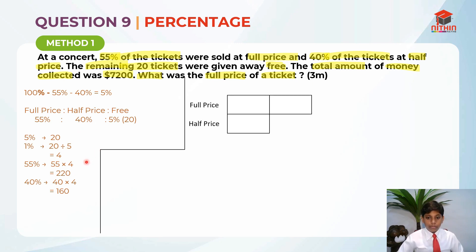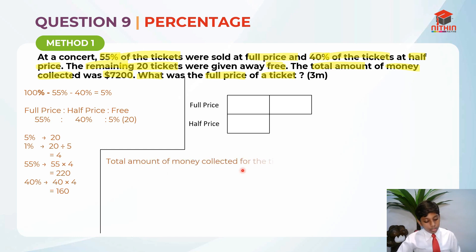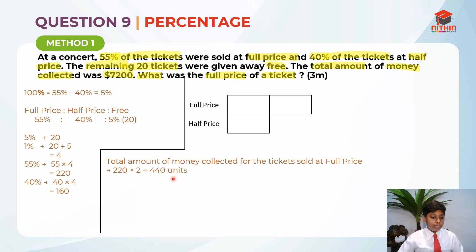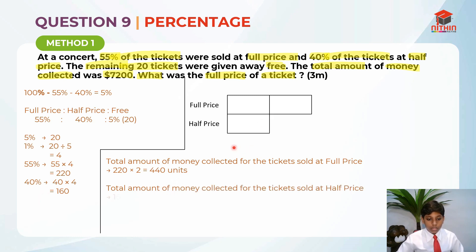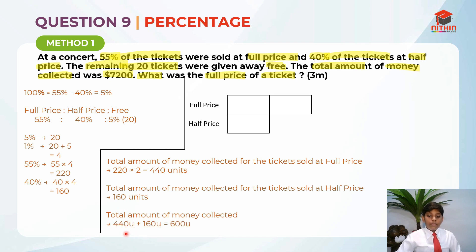The full price is 2 units, because the full price is 2 times the half price. The half price is 1 unit. So the total amount of money collected at full price is 220 times 2 — because 1 ticket is 2 units — which gives 440. For the half price tickets, it stays at 1 unit, so it's 160 units. We just add them up: 440 units plus 160 units equals 600 units.